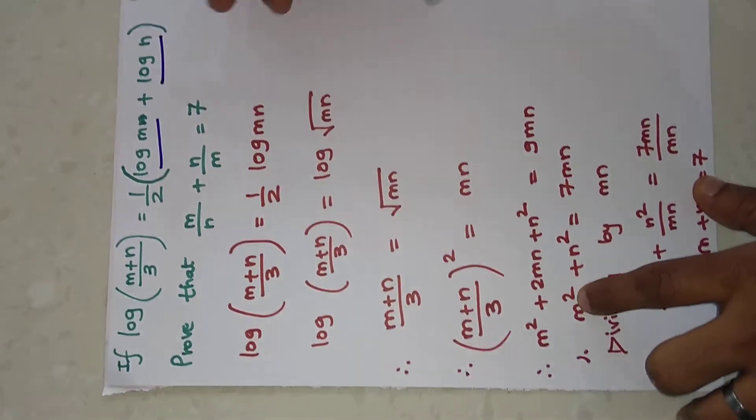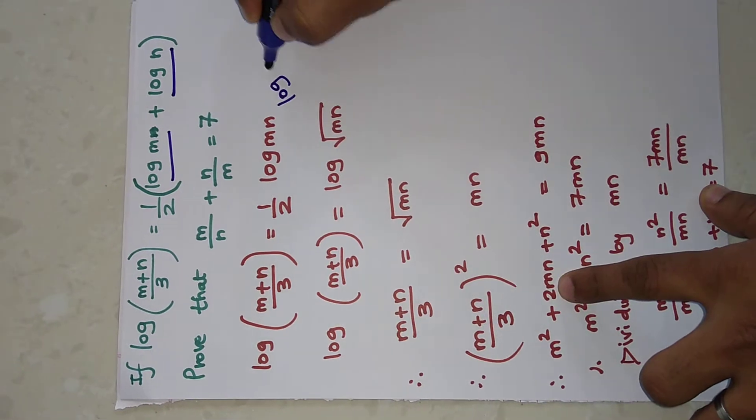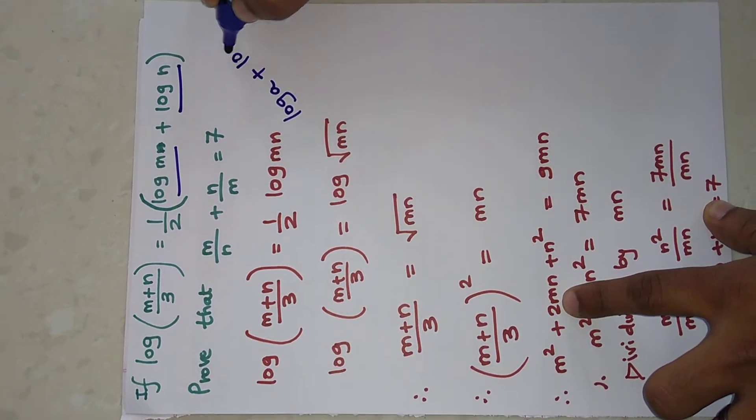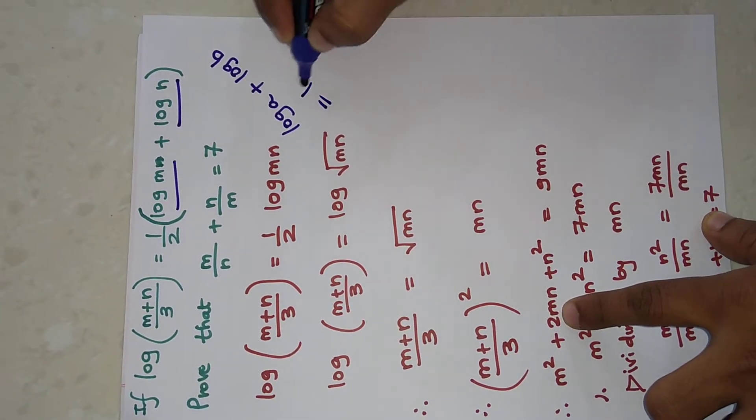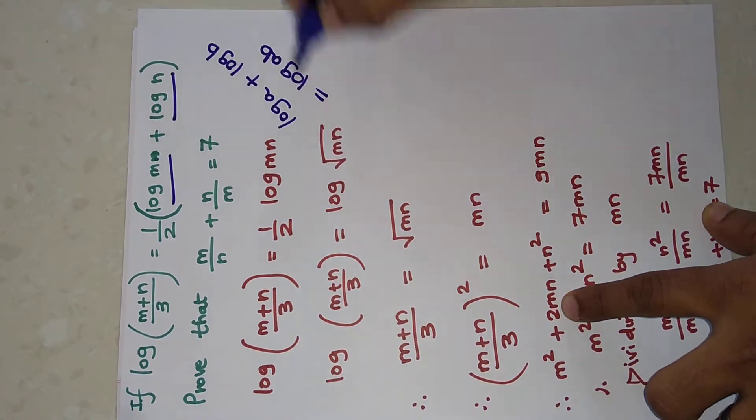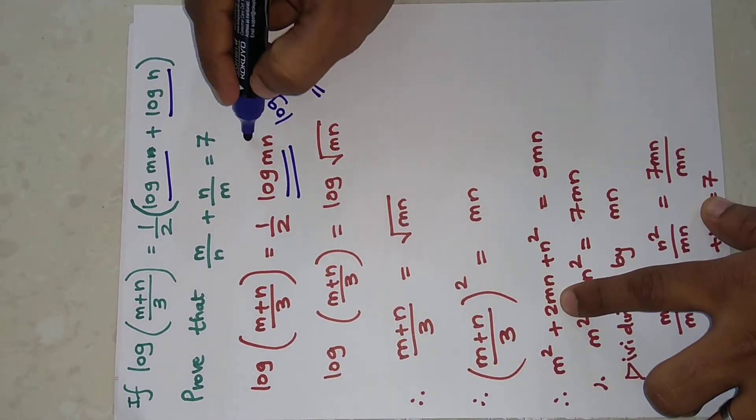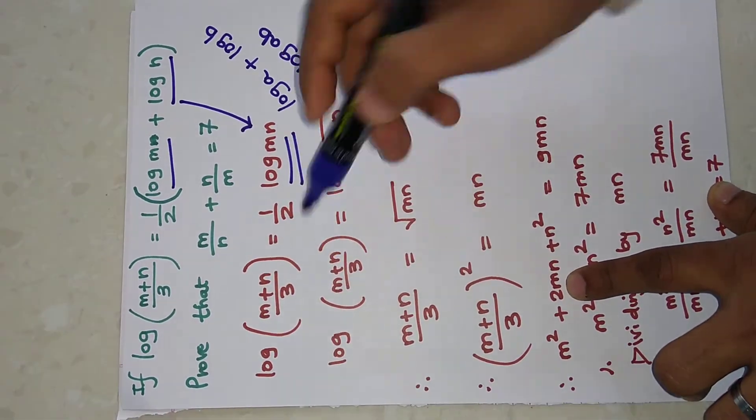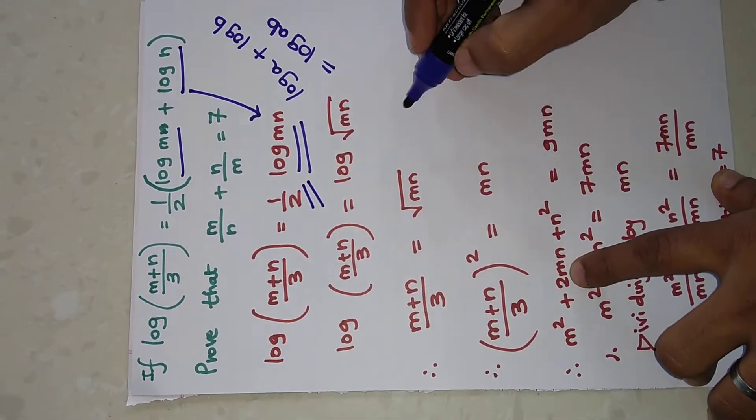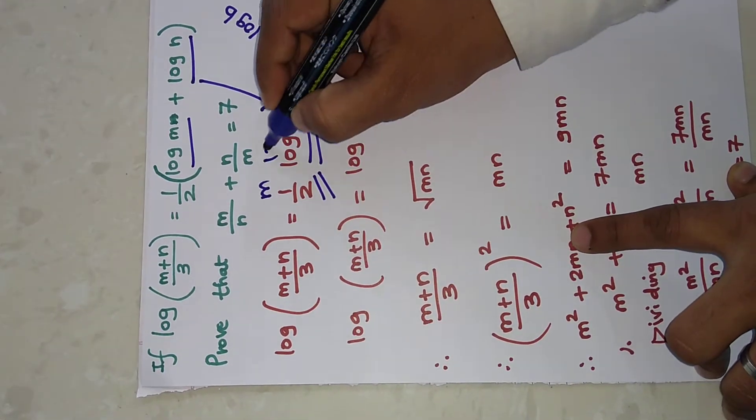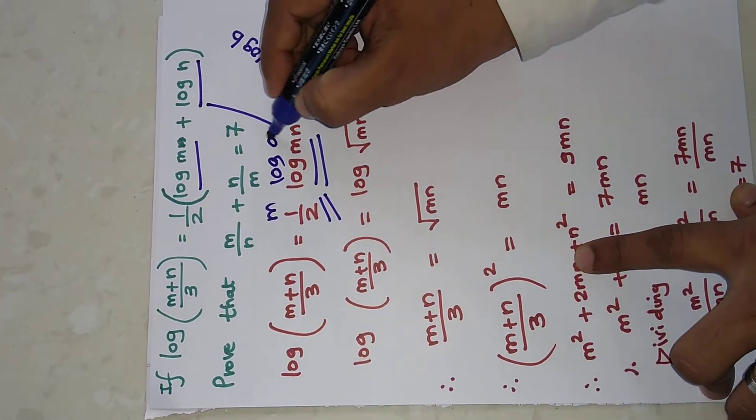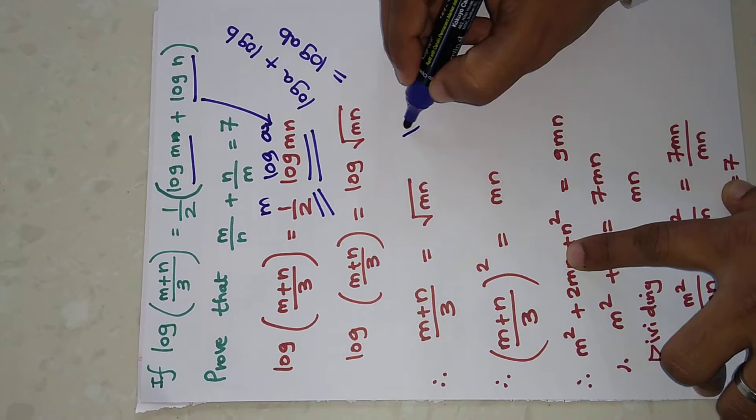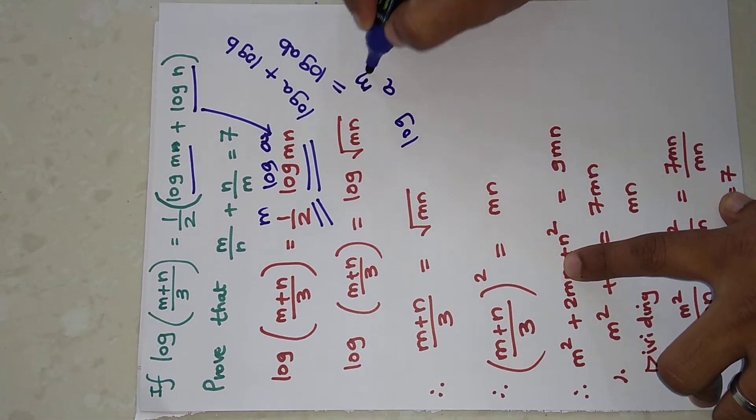Log(a) plus log(b) is equal to log(ab), so instead of this we are writing this. After that, the left-hand side part will remain as it is. There is 1/2, which means (1/2)log(a), so it will be log(a) raised to 1/2.